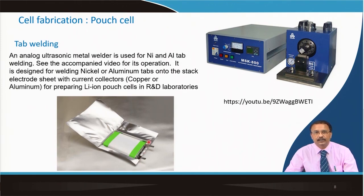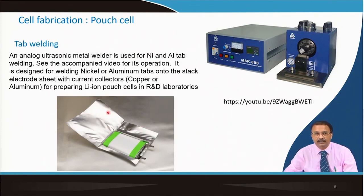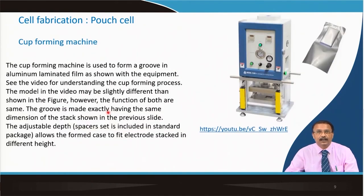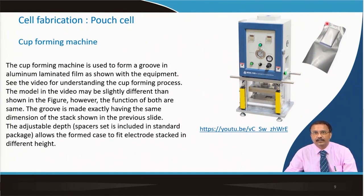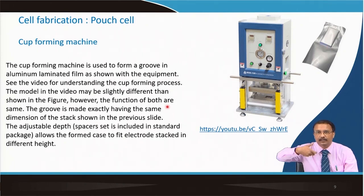The pouch cell — the heart of the pouch cell — is now ready. Now you will have to cover it. You will have to seal this jelly roll inside to get the pouch cell configuration. To do that, you need a cup forming machine because you will have to give space to this polymer-coated aluminium material. This cup forming machine forms the cup where the stacked assembly can be placed.